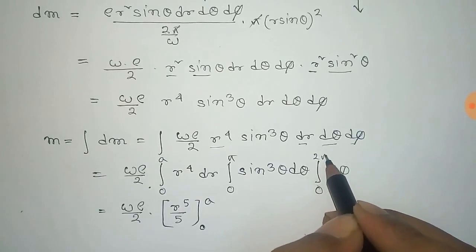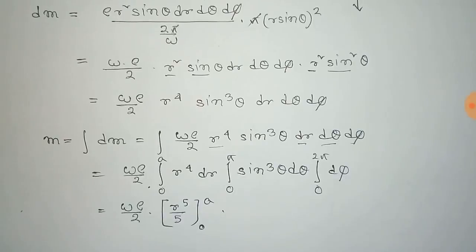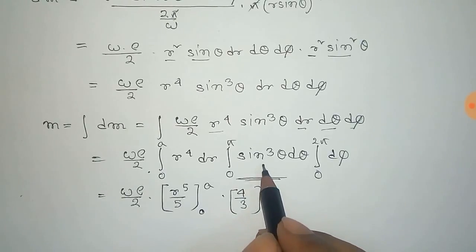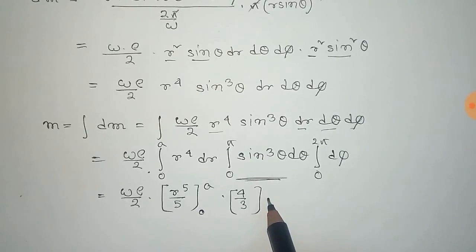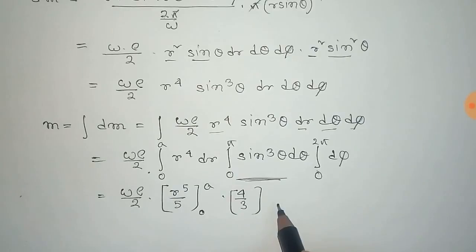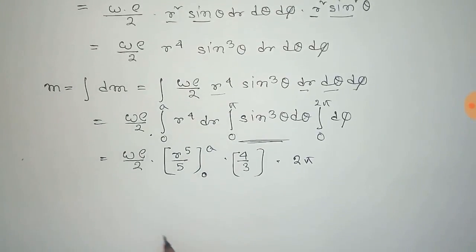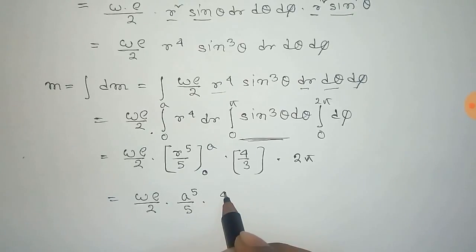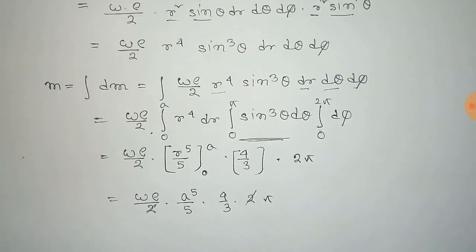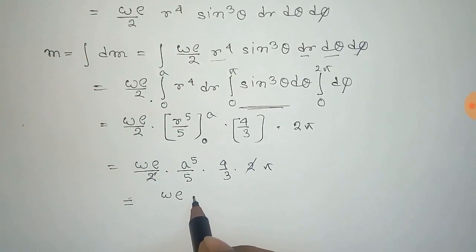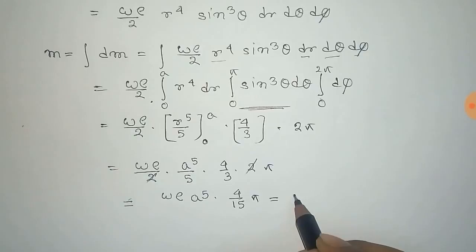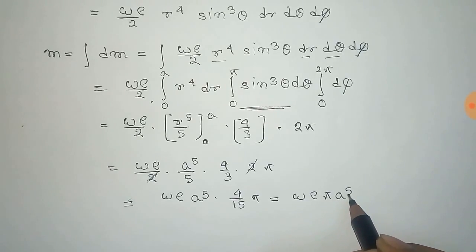The limit of phi is 0 to 2 pi. The integration of sine cubed theta d theta from 0 to pi equals 4 by 3 — for this integral you can watch our video on the integral of sine cubed theta, the link is in the description. The integral of d phi from 0 to 2 pi equals 2 pi. After putting in the limits, r to the power 5 by 5 evaluated from 0 to a gives a to the power 5 by 5. Thus M equals omega rho times a to the power 5 times 4 by 15 times pi, giving omega rho pi a to the power 5 times 4 by 15.